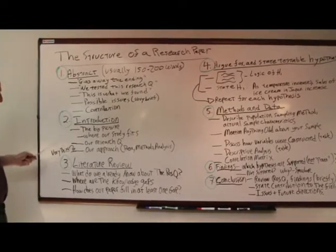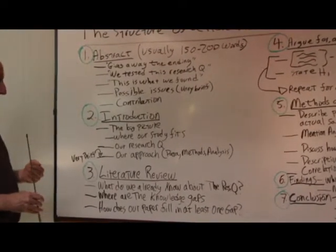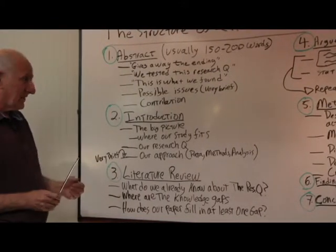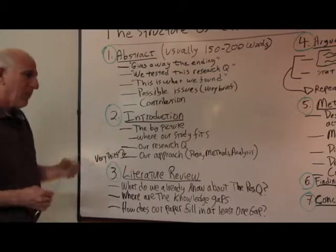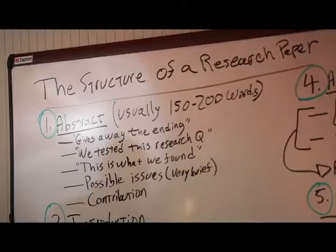There's an abstract, an introduction, a literature review, the testable hypotheses, the methods and the data, the findings, and then the conclusion. Let me break each one of those down briefly for you. More detail is always possible, but I want to just give you the outline of what goes into each section.